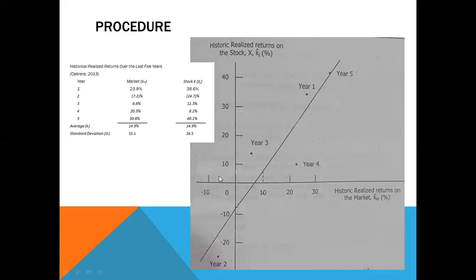For year three, 6.6 percent for the market, so somewhere here, and then stock X is 12.3 percent, so this one. This is year three. For year four, that's 20.5 percent, so somewhere here, and stock X is 8.2 percent, so this is year four. For year five, for the market that's 30.6 percent, so somewhere here, and for the stock X 40.1 percent, so this is year five. And we're going to draw the line.